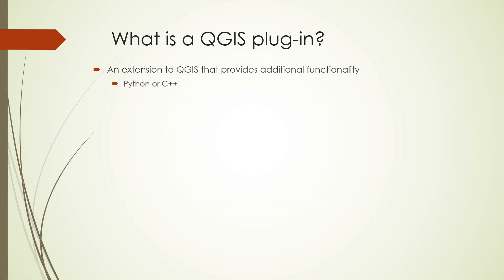Some of the core QGIS plugins that were originally user-contributed eventually become part of the core set of QGIS plugins, and some of them get rewritten in C++ to improve efficiency. Some plugins can be quite small — only a few lines of code — such as the latitude-longitude calculator, which will be our first example in this course. But plugins can also be very large and complex. For example, the semi-automatic classification plugin is about 20 megabytes in size and is virtually a complete program for analysis of remote sensing data from within QGIS.